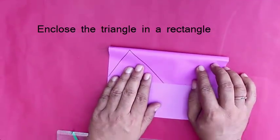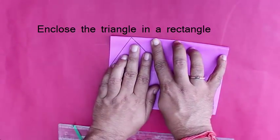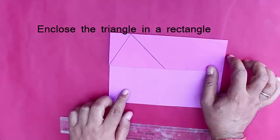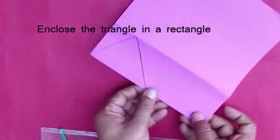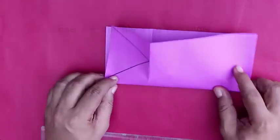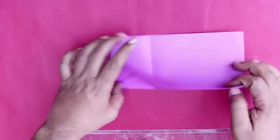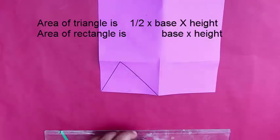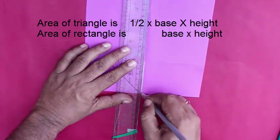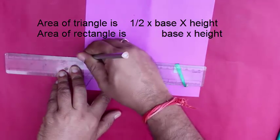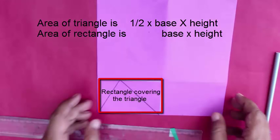We have to fold a square with the same area as this triangle. For that, we will first enclose this triangle in a rectangle. The area of a rectangle is base times height and the area of a triangle is half base times height. Therefore, the area of our triangle is half the area of this enclosing rectangle.